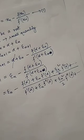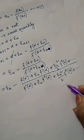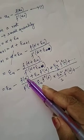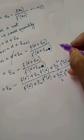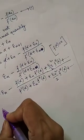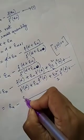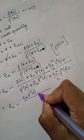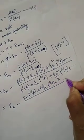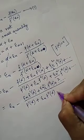Now, f(alpha) equals 0. Why? Because alpha is a root, and if you substitute this root into the main functional equation, it will obviously be 0. So f(alpha) = 0. Therefore, on the right hand side, the numerator becomes epsilon_n f'(alpha) plus epsilon_n squared over 2 times f''(alpha) plus higher order terms, and the denominator is f'(alpha) plus epsilon_n f''(alpha) plus higher order terms.